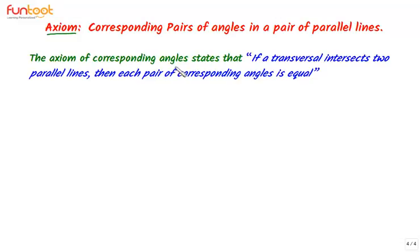The axiom of corresponding angles states that if a transversal intersects two parallel lines, then each pair of corresponding angles is equal. Let's understand the statement of this axiom in a little more detail.